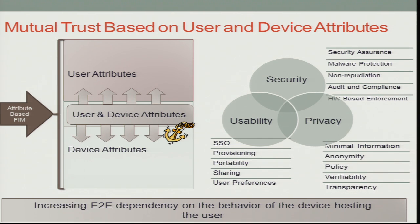We have always considered user attributes and device attributes separately, but we need to find a really good mechanism to get to a point where user and device attributes interplay with each other and have a nice anchor to the device itself. That way there is a way to enforce that a particular device attribute and user attribute are linked together — a trustworthy mechanism to retrieve this information and use it in our access control systems.